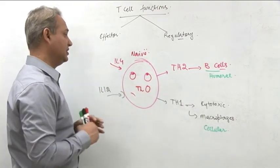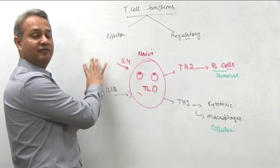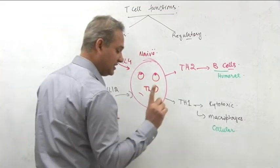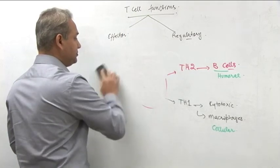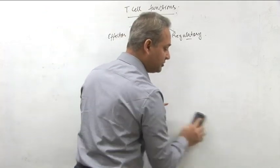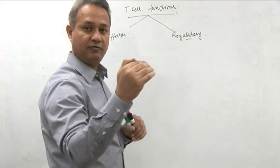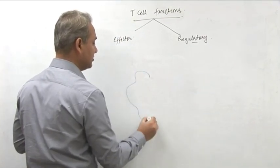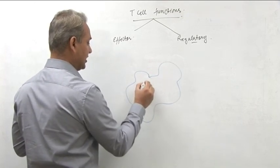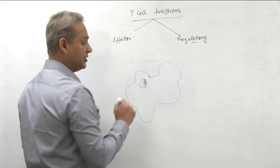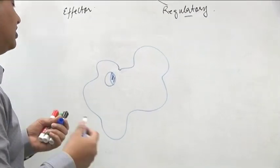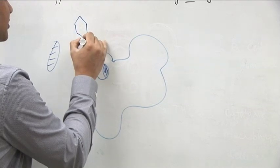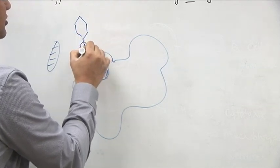Now let's talk about the T-cell interactions. Let's say we have a macrophage. Some pathogens came along, and the macrophage is going to phagocytose them — eat them up. Inside, it cuts the pathogen up, digests it, and breaks it into smaller pieces. Those smaller pieces are presented on the surface on MHC-2 protein. All professional antigen presenting cells — macrophages, dendritic cells, and B-cells — present antigens on MHC-2.